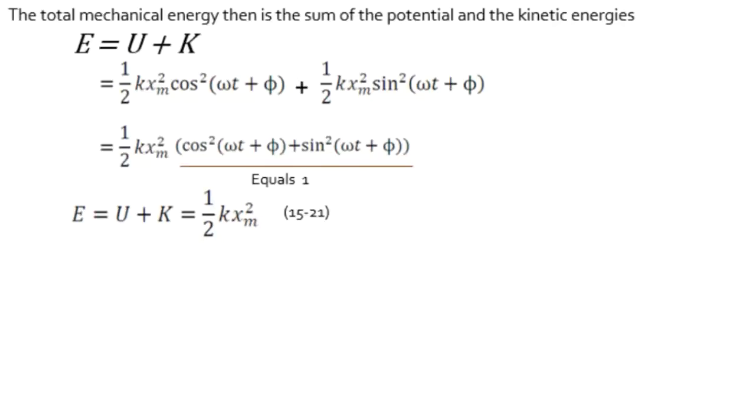We know that the total energy of the system is the sum of the potential and the kinetic. So let's add them together. Here, recognize that each term has the same coefficient, one half kx max squared. So I'll factor that out. What's left over here, cosine squared plus sine squared, we know that equals one. So that tells us that our total energy of the system, U plus K, is equal to one half kx max squared.